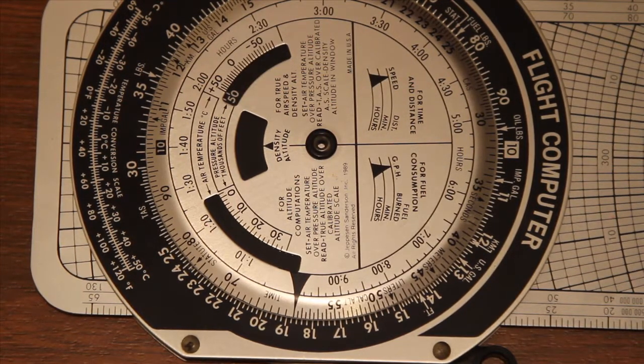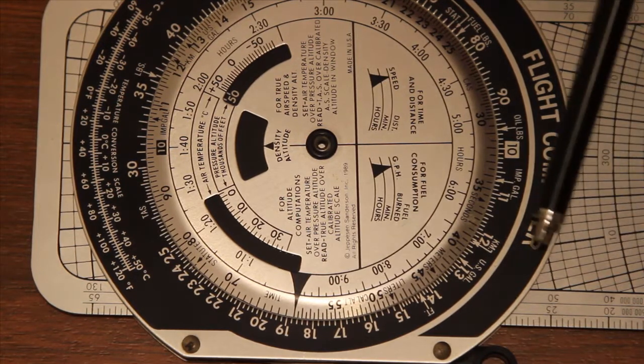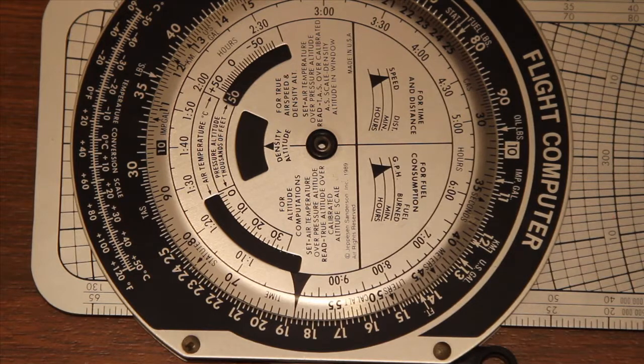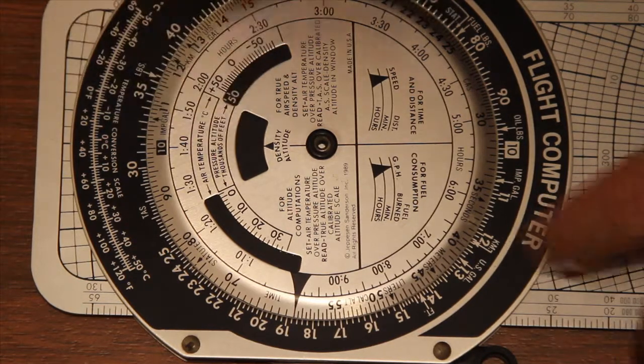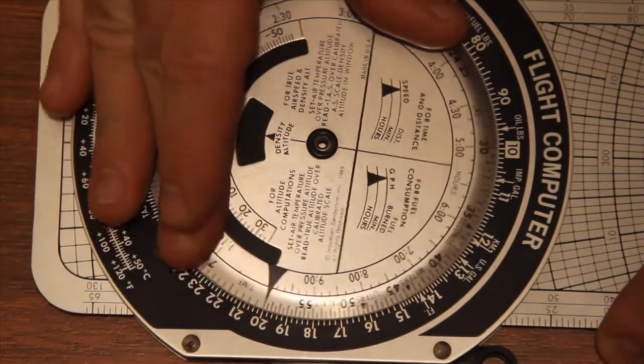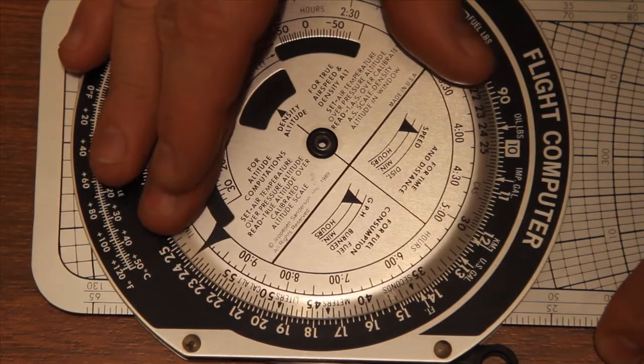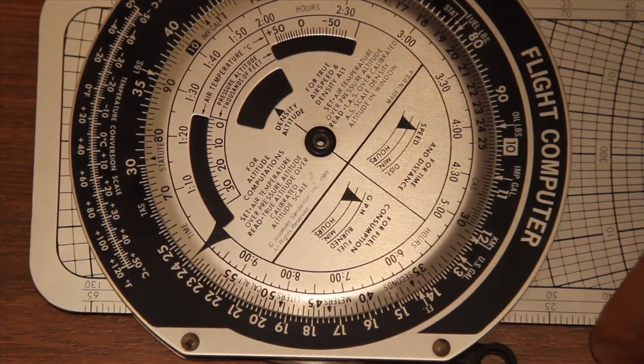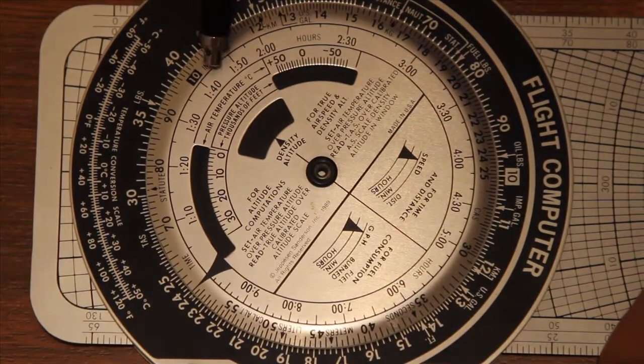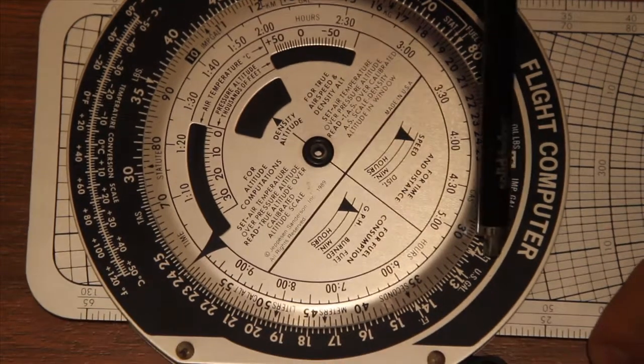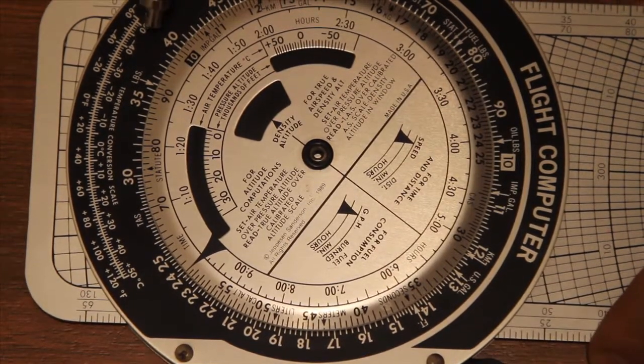So let's do that. Let's say you want to divide 120 by 30. So what we do is put 120 on the outer scale, we move 30 around on the inner scale, and then we read the answer off over here on the 10. And you can see that the answer is 4. So 120 divided by 30 equals 4.